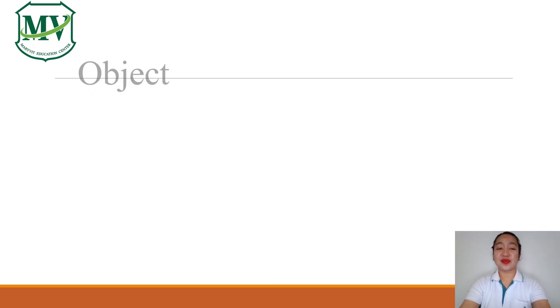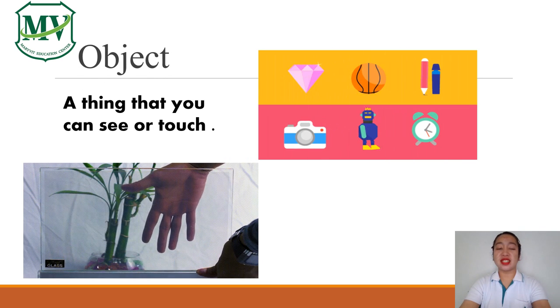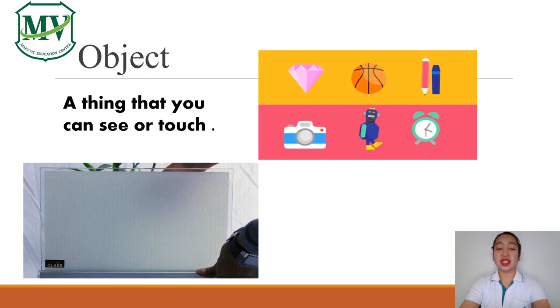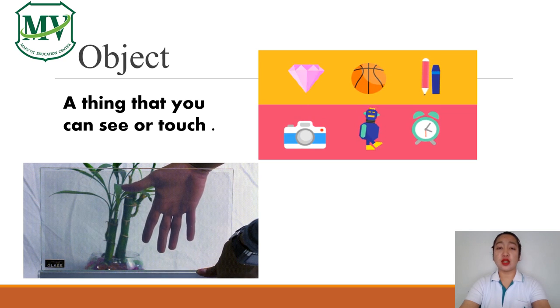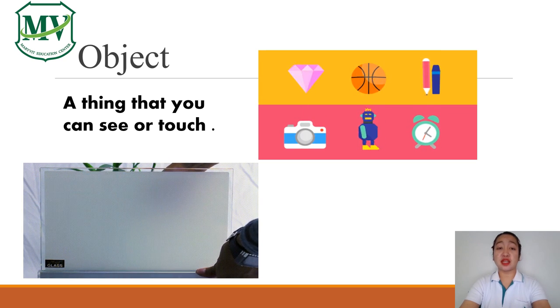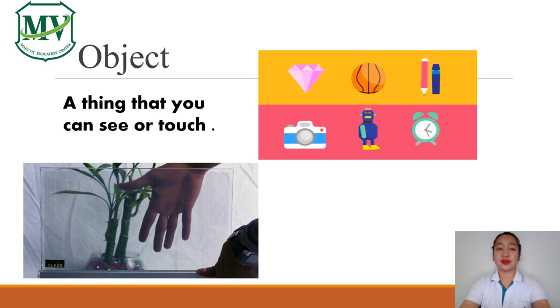Next, object. Object is a thing that you can see or touch. Examples are glasses, camera, ball, or anything that can be seen or touched.